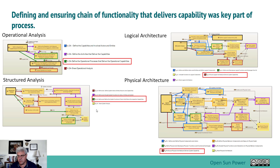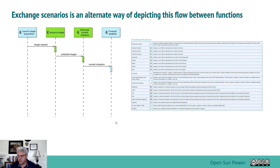We're going to show two examples: an operational analysis example and a physical architecture example. Exchange scenarios are an alternate way of depicting flows. Here you can see a functional exchange scenario with functions on top and exchanges depicted — for example, an image request going into the acquire image function, and collect images going to the elaborate current situation function. This diagram is usually built after you have done a system architecture diagram, because you are leveraging existing content.